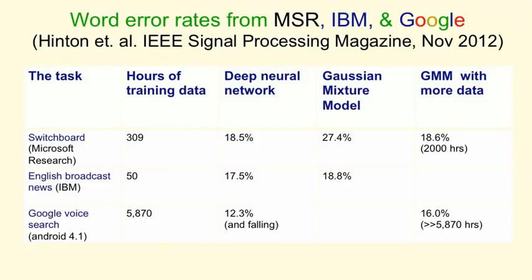Looking at recent results from several different leading speech groups: Microsoft showed that this kind of deep neural network, when used as the acoustic model in a speech system, reduced the error rate from 27.4% to 18.5%. Alternatively, you could view it as reducing the amount of training data needed from 2,000 hours down to 309 hours to get comparable performance.